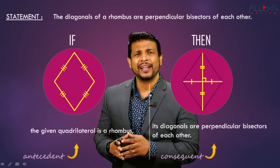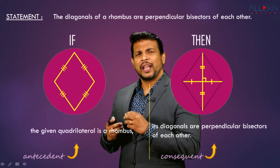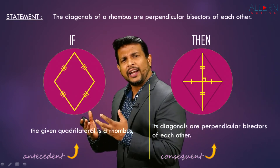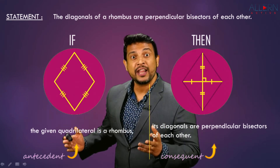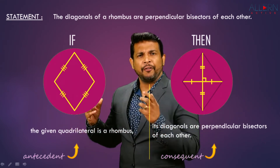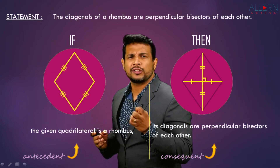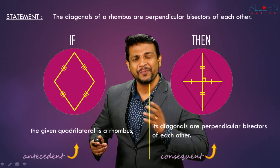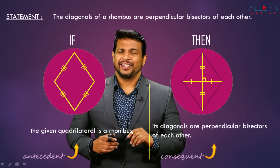So we can be given a statement and asked to write it in the conditional form, then identify the antecedent and the consequent. It's very simple: the antecedent is what comes between 'if' and 'then,' and the consequent is what follows 'then.'